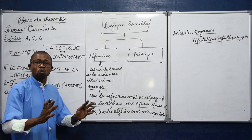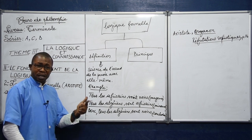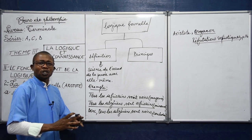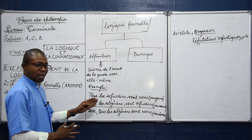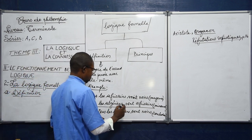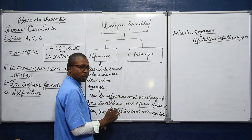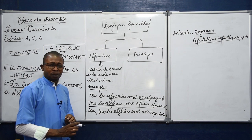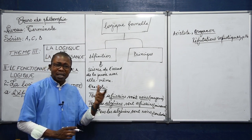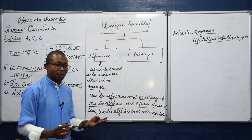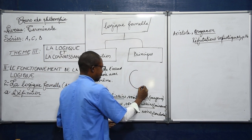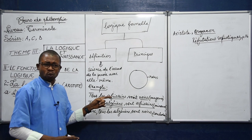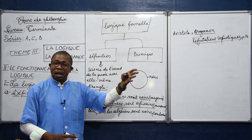Le grand terme est celui qui a plus d'extension, c'est-à-dire plus d'êtres. Identifions ces termes : nous avons « africains », « noirs » et « algériens ». Parmi ces trois termes, ce qui a plus d'extension, c'est le terme « noir ». Il n'y a pas que les Africains qui sont noirs : il y a des noirs européens, des noirs américains, ainsi de suite.